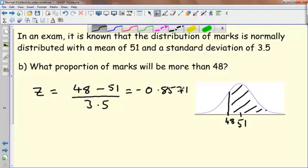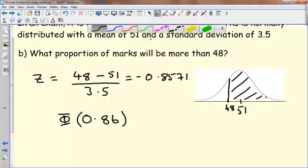So I can't look up that many decimal places, so we're going to round to 0.86. It's a minus and the tables don't have minus values. All I can do is look up the positive value and then I'll need to think about what that's actually showing me.